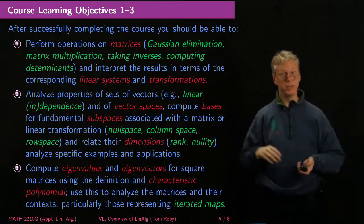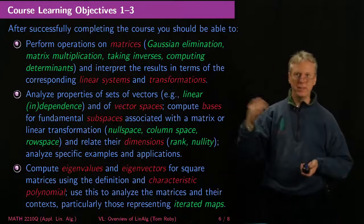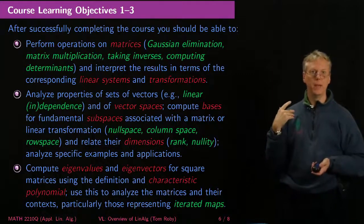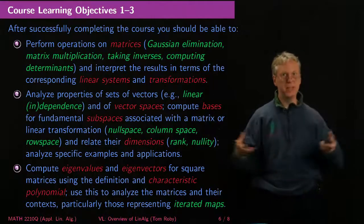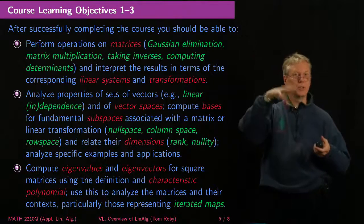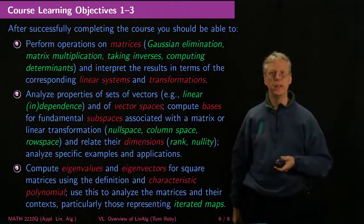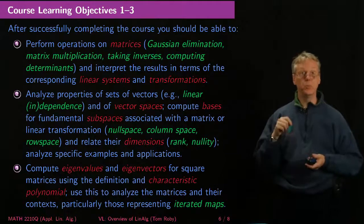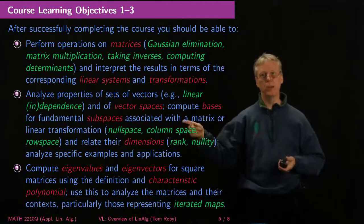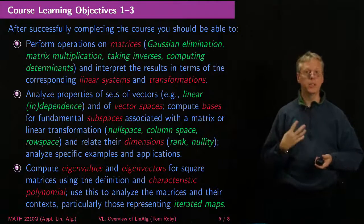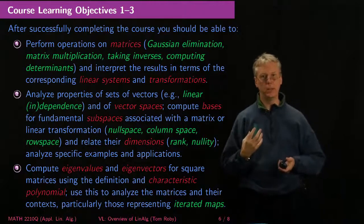We'll want to be able to analyze properties of sets of vectors, linear dependence and independence, and talk about vector spaces. So spaces mean that if you add two vectors or multiply by scalar, you stay inside the space, so they're sort of self-contained. And the self-contained ones that are associated with the matrix are the null space, the column space, the row space, and these come up all the time in understanding applications.